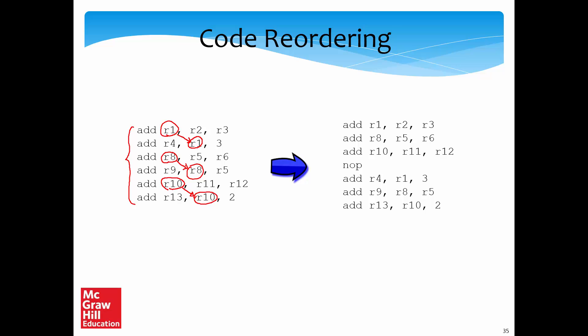In principle, the compiler can reorder the code such that there are three instructions between every producer and every consumer instruction. The programmer can also do it, but it is not a good idea to put the onus of ensuring correctness on the programmer. Such transformations should always be done at an automated level — at the level of the compiler.